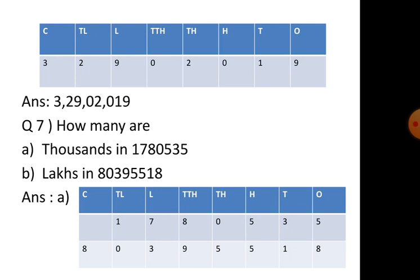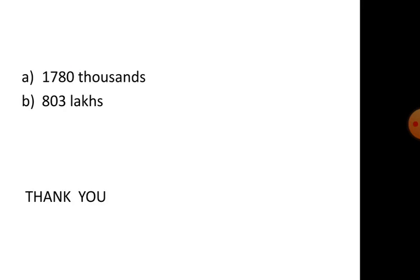Question 7: how many thousands in 1,780,535? And for number (b), how many lakhs? We make the place value chart and place the digits. For thousands, we take all digits up to and including the thousands place: 1780 thousands. For lakhs, the digit in the lakhs place — looking at the number, the answer is 803 lakhs.